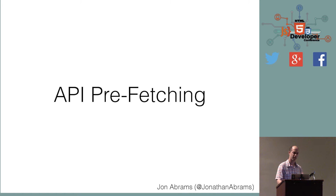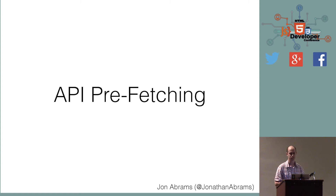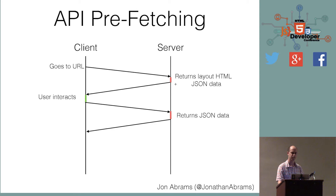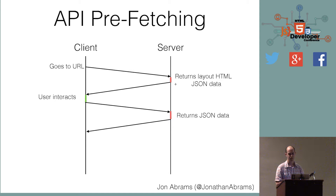So the question is: can we use these cool new front-end frameworks but remove that initial delay, that initial round trip? I'm going to propose a concept I'm calling API prefetching. I'm sure many people have done this before, but I never saw a good name for it. The idea is to turn client-side rendering from the two-step process into one where, when the browser sends its initial request to the server, the server returns both the layout HTML and the JSON data in the same response, so it can be rendered right in the first go. From then on, it's just JSON data going across the pipe.